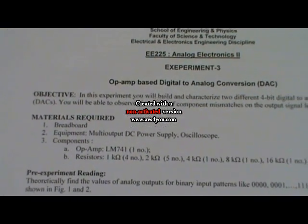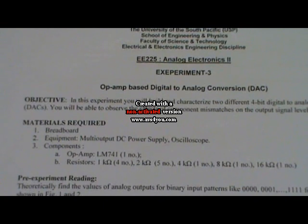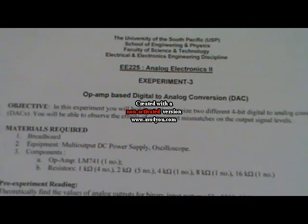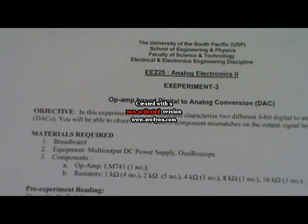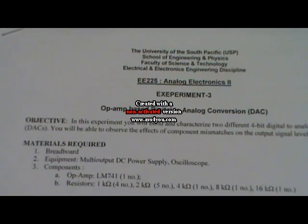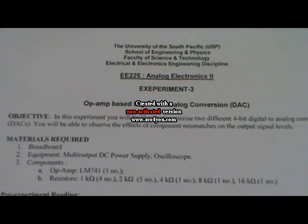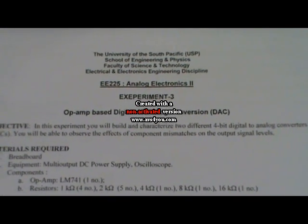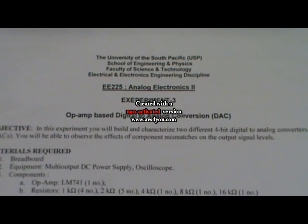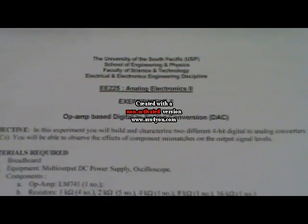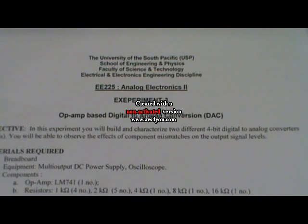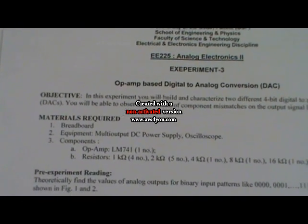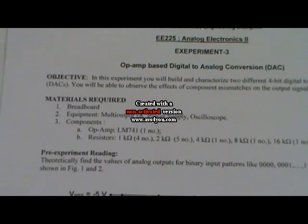The objective is to build and see the characteristics of two different 4-bit DAC converters, and we will observe the effect of component mismatch practically, which is also one of the limitations of binary weighted resistor networks. Use the components as mentioned in today's manual.